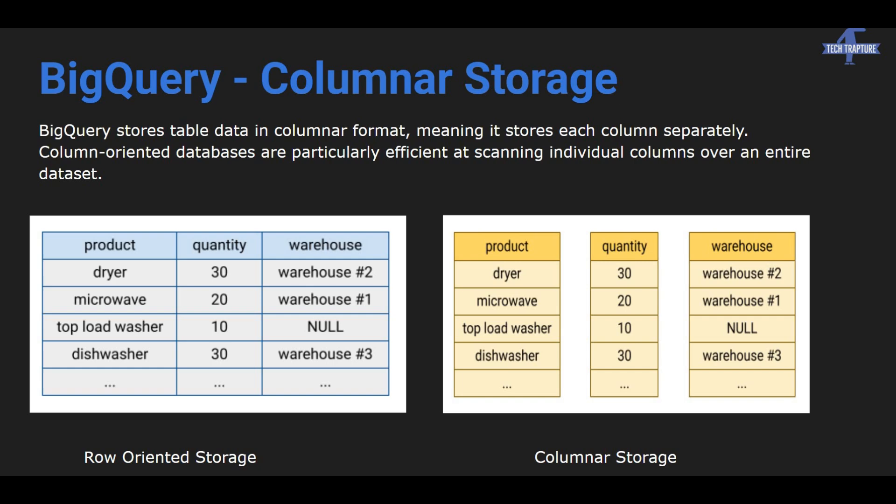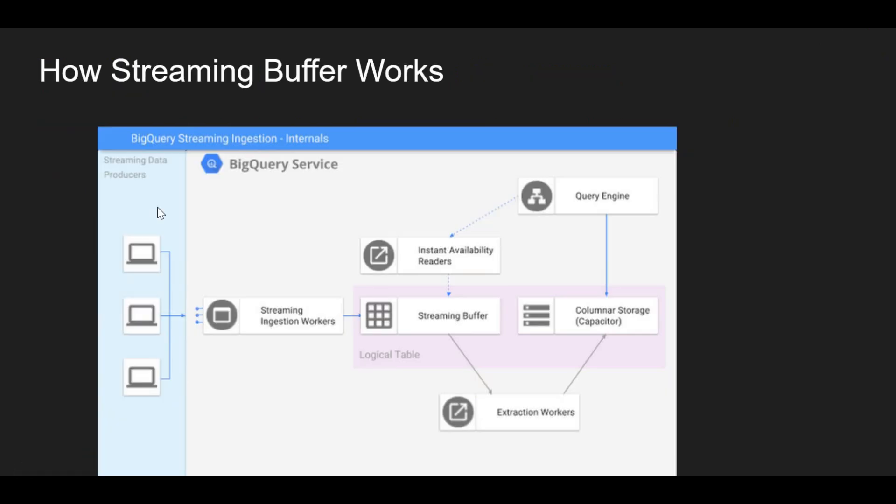Columnar storage is efficient when we want to read a huge amount of data from BigQuery. But if we want to insert streaming data into BigQuery, this columnar storage is not efficient — if you keep inserting data directly into it, it will be inefficient and will not work perfectly. That is why there is the streaming buffer concept.